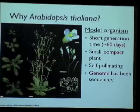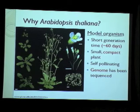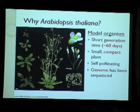The first question I'd like to address is why we would choose Arabidopsis thaliana as a model organism. There are several reasons. The first is that it has a really short generation time of just 60 days, so going from one generation to the next doesn't take very long. It's also a very small and compact plant, so many plants can be grown at the same time in a small area.